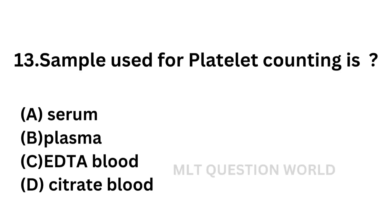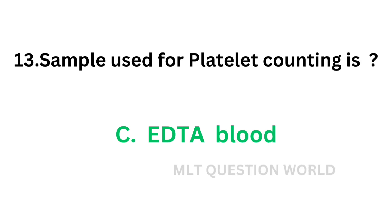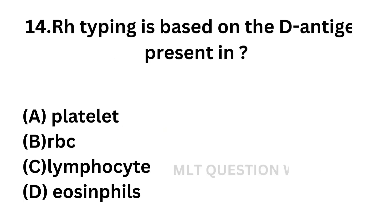Question number 13: Sample used for platelet count is. Option A: Serum. Option B: Plasma. Option C: EDTA blood. Option D: Citrated blood. Usually we use EDTA blood for platelet counting. Citrated blood can also be used to minimize pseudothrombocytopenia due to clumping of platelets in EDTA blood. But the correct answer here is EDTA blood.